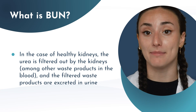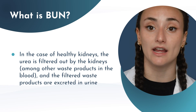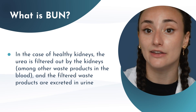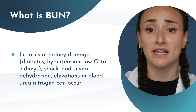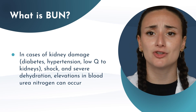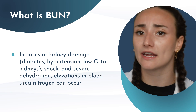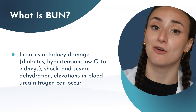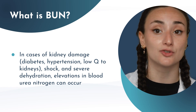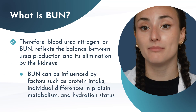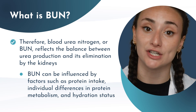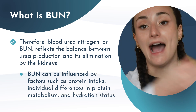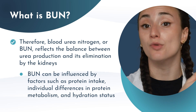The urea travels from the liver into the circulation and back to the kidneys to be filtered out. In healthy kidneys, these waste products including urea are excreted in the urine just fine. However, in cases of kidney damage — whether it be shock, dehydration, diabetes, or chronic kidney disease — we may have defects in our ability to remove and excrete that urea. Therefore, our blood urea nitrogen or BUN reflects the balance between our body's production of urea and our kidneys' ability to eliminate it.